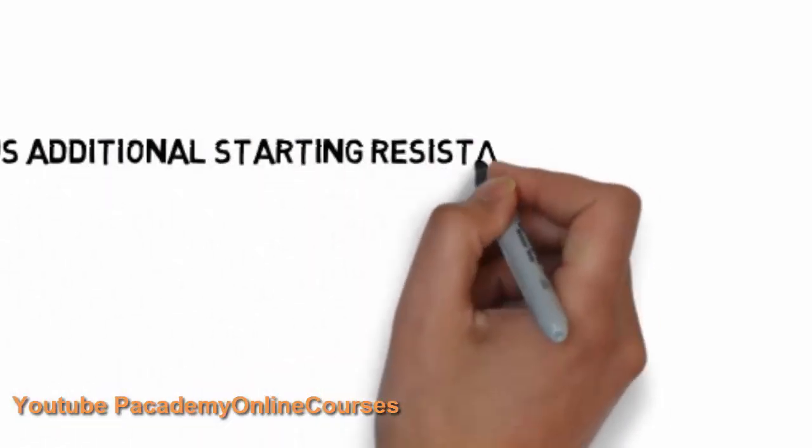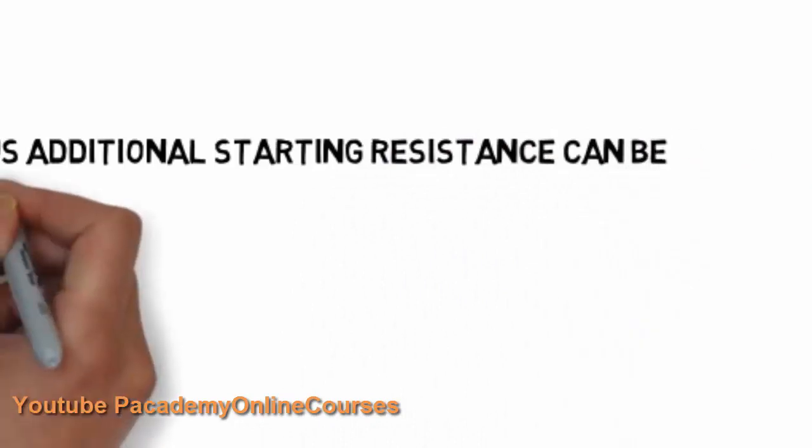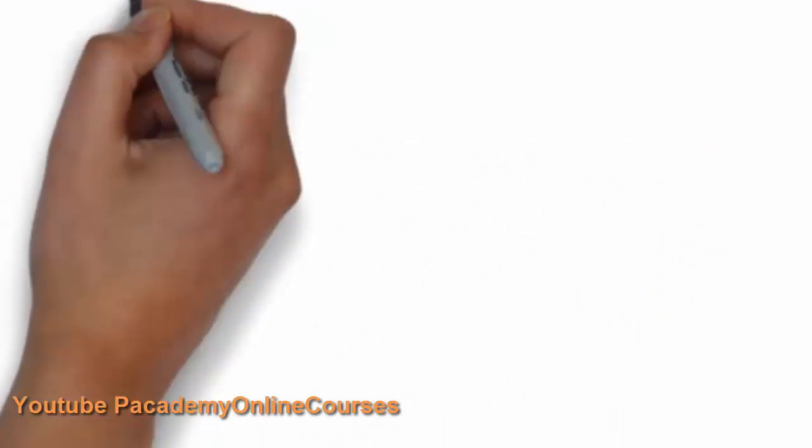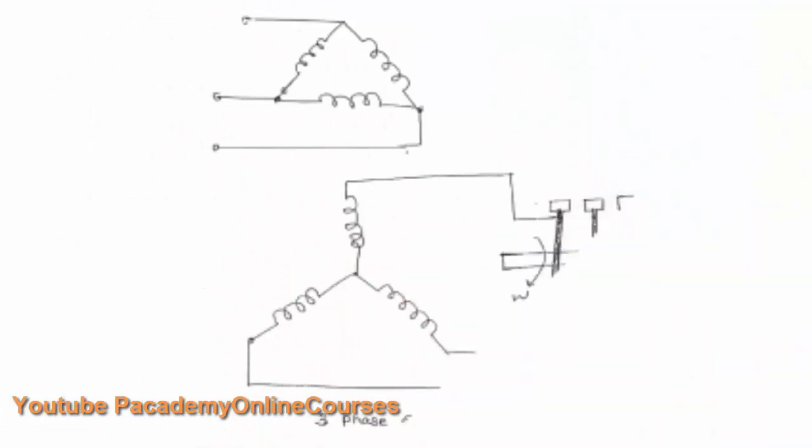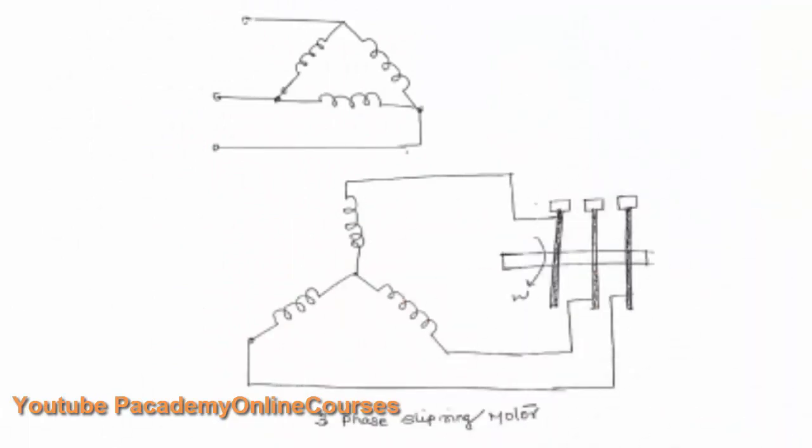This will enable the torque to be higher in case of slip ring induction motors. This is how the circuit will look like. The stator winding is star connected and the rotor is connected in star. The three phases are brought out and connected to the slip rings which will be connected to the external circuit via brush contacts.